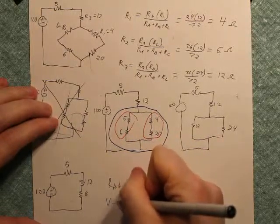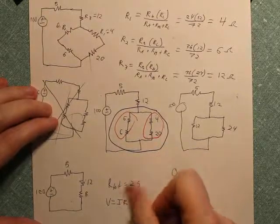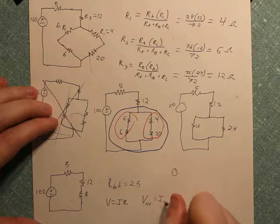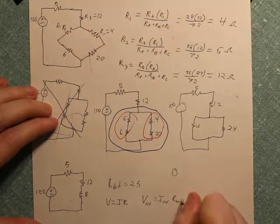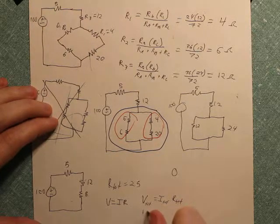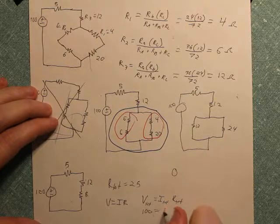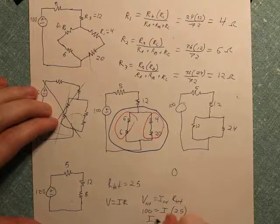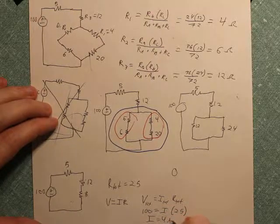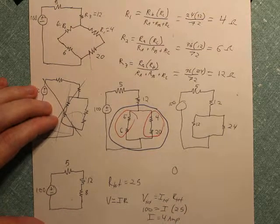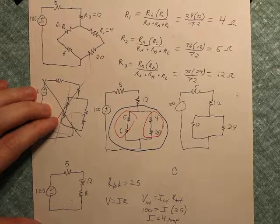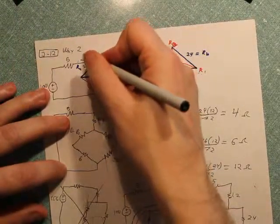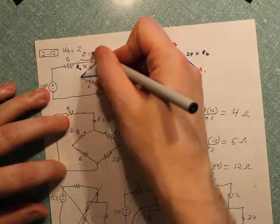So V equals IR. V total equals I total R total. And we're going to plug in 100 equals I times 25. I equals 4 amps. And that 4 amps, remember, is from the initial part of the problem, the one coming in here.